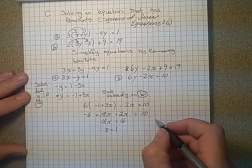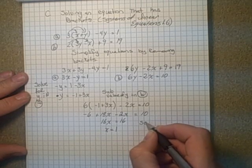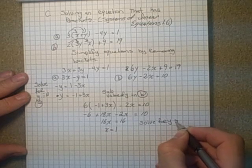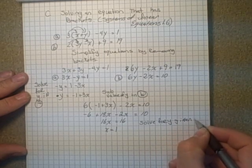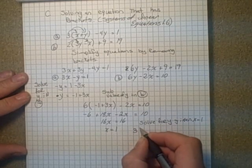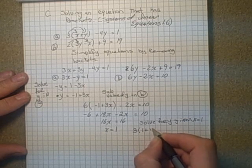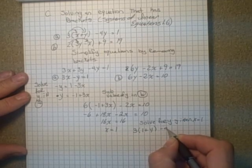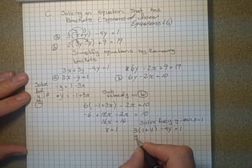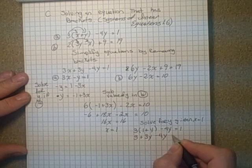Now I would go back and solve for y, given that we know x is equal to 1. So I'm going to use the top equations. 3 times 1 plus y minus 4y equals 1. 3 plus 3y minus 4y equals 1.